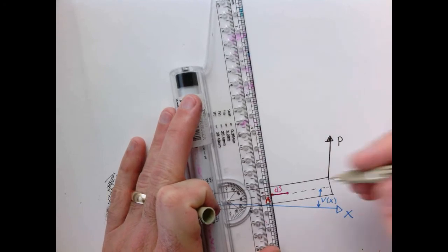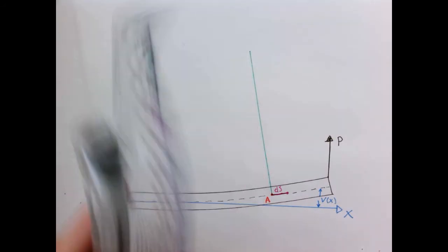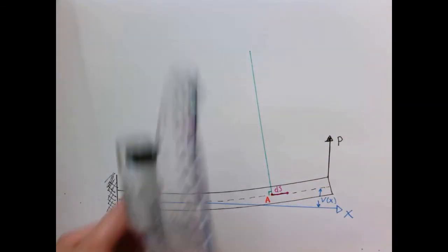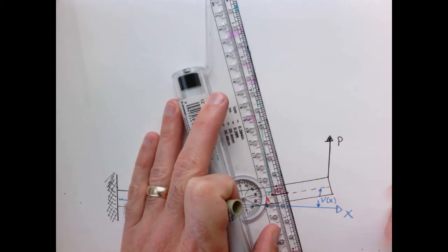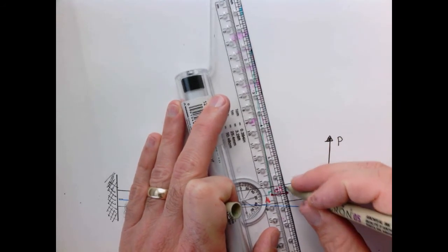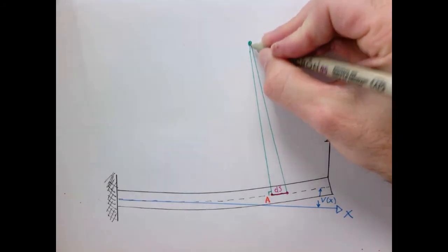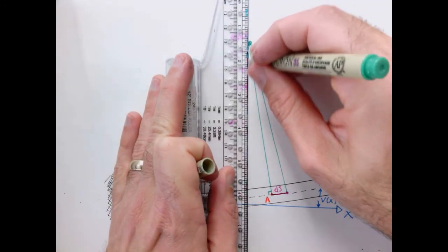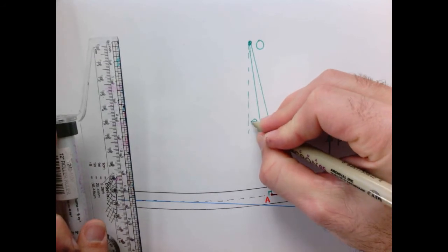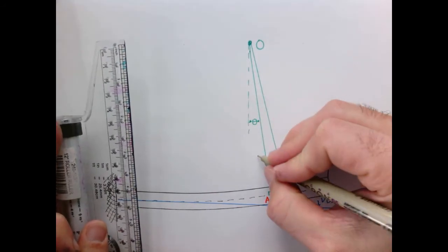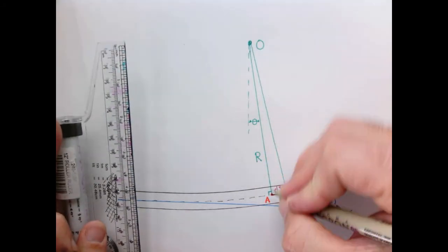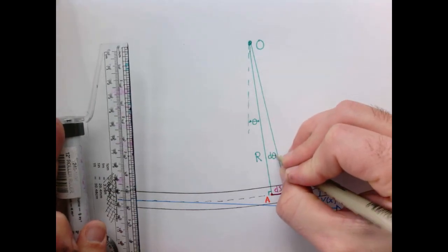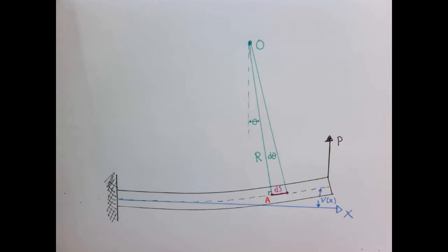We draw a line going off to some point far away, perpendicular to the neutral axis. Then another line at the differentially far point, also perpendicular to the neutral axis. Those lines intersect somewhere — we'll call that point O, the center of curvature. We define a few angles: theta is the angle this line has swept from the vertical, R is the radius of curvature at point A, and the differential change in angle is dθ.